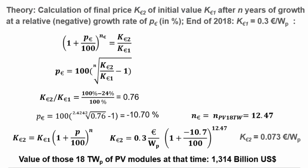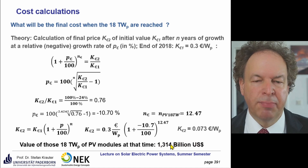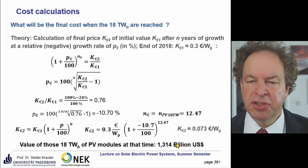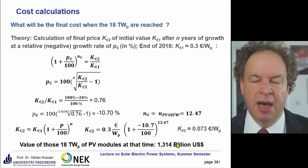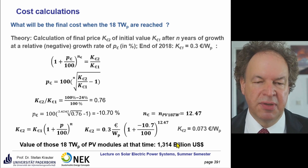The total value of those 18 terawatt, if you want to sell them after being installed, would be 1,314 billion US dollars. That sounds a lot, but it's quite comparable to military expenditure — so it's not really that much.